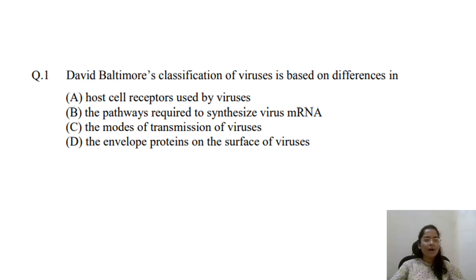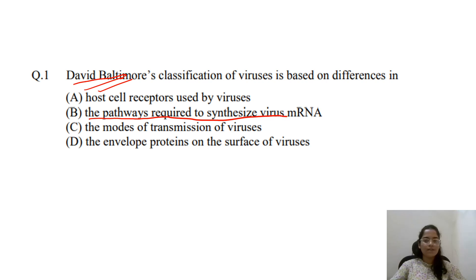David Baltimore's classification of viruses is based on — his 7 classes are classified based on the central dogma applied. The pathway required to synthesize viral mRNA is the basis of classification. The answer is option B.